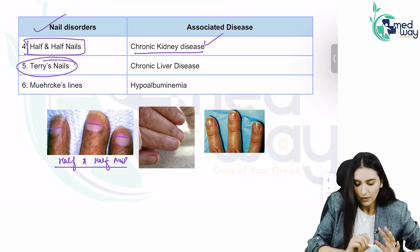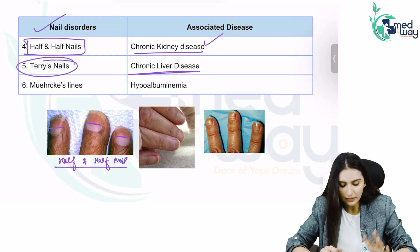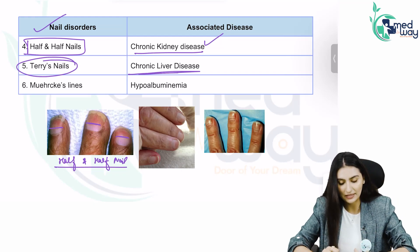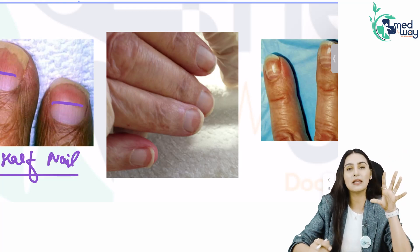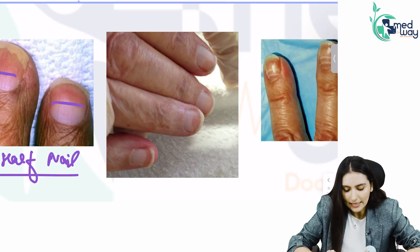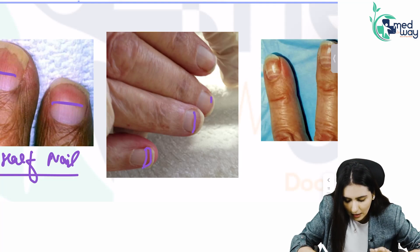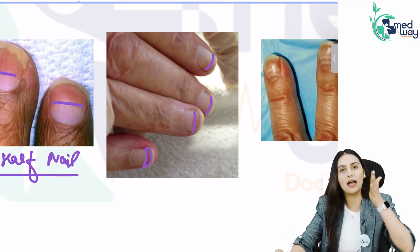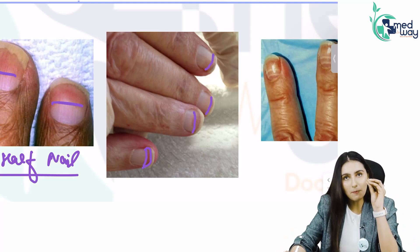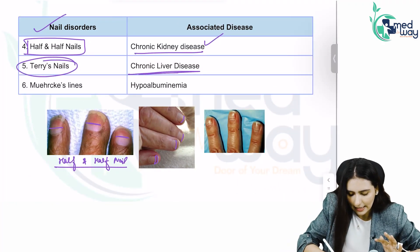Then there is Terry's nails, which are seen in chronic liver disease. How will you differentiate it from half and half nails? In half and half nails, a substantial amount is pink in colour. In Terry's nails, you just have a little band towards the end of the nail that is pink in colour — only a small band at the distal part. You cannot characterize this as half and half.